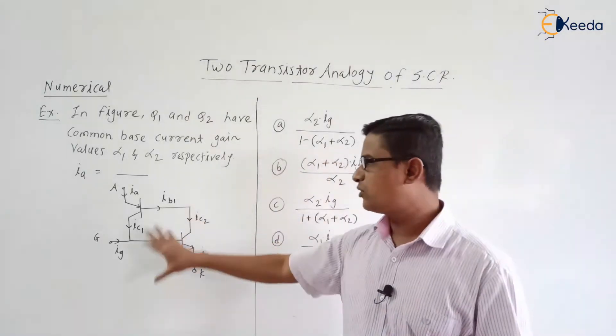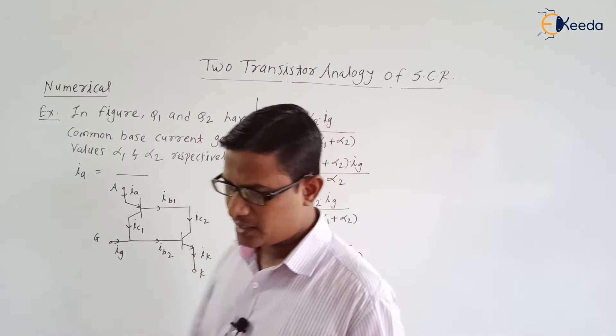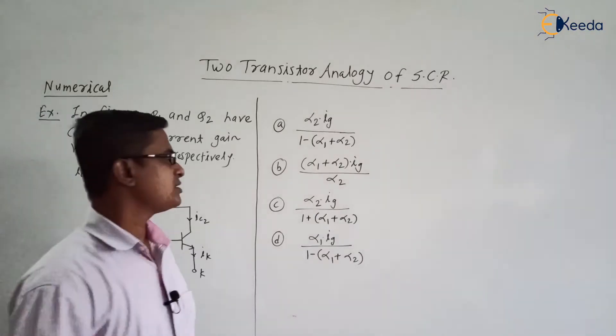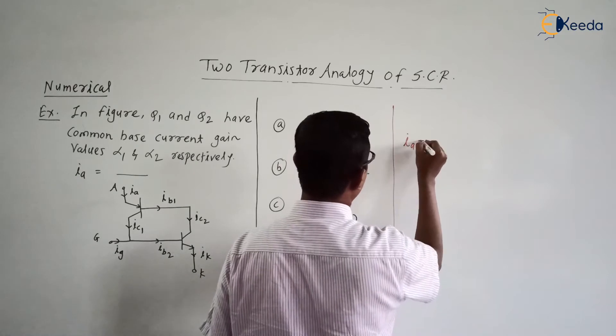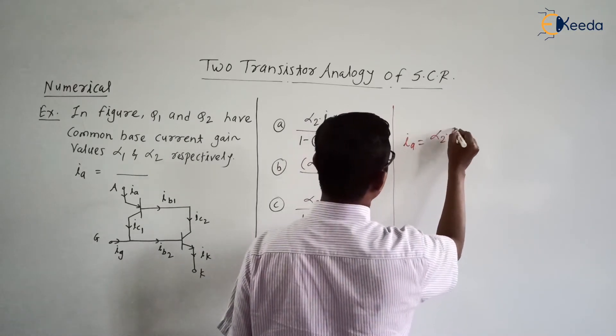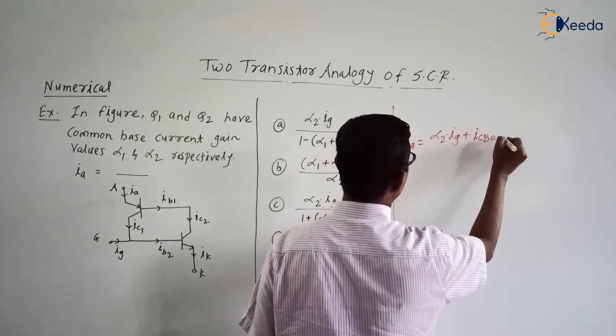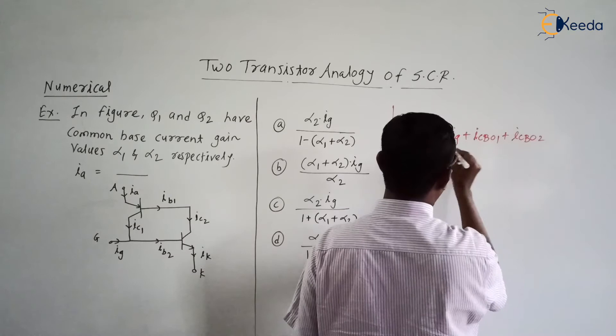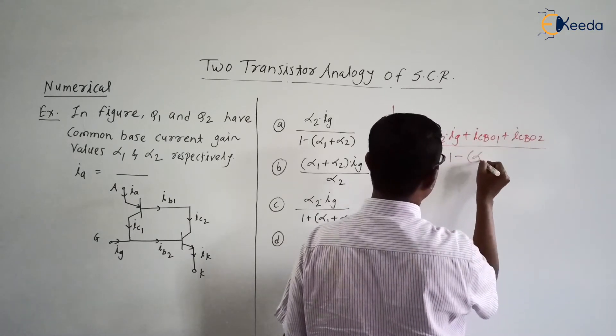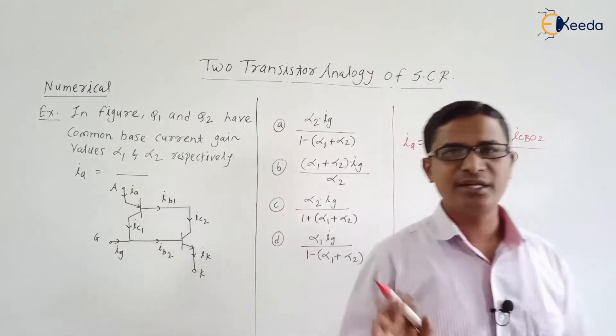We have already derived the expression for the anode current for the circuitry. It was Ia is equal to alpha 2 into Ij plus IcbO1 plus IcbO2 upon 1 minus alpha 1 plus alpha 2. This is the expression we have already derived.